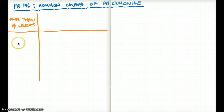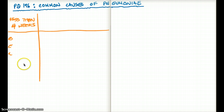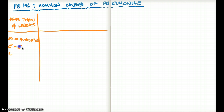For less than 4 weeks, I remember them as BEL — B-E-L. This BEL works for both pneumonia and meningitis in kids less than 4 weeks. B is for Group B Strep, E is for E. coli, and L is for Listeria. These are the ones that are going to cause pneumonia for children less than 4 weeks old.